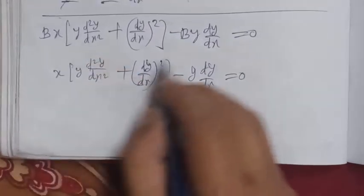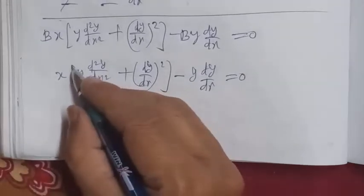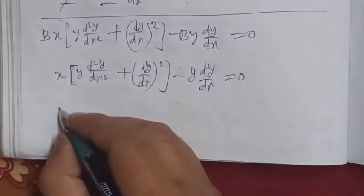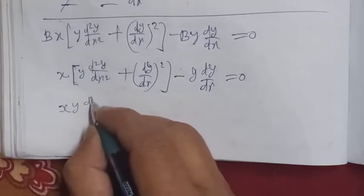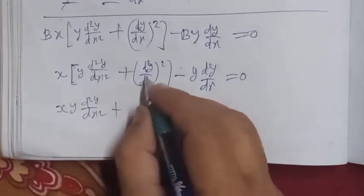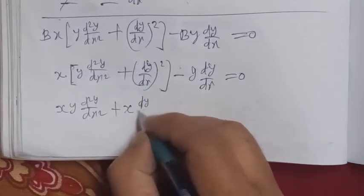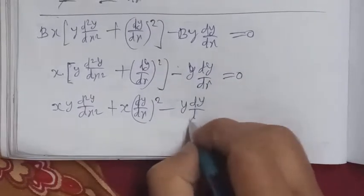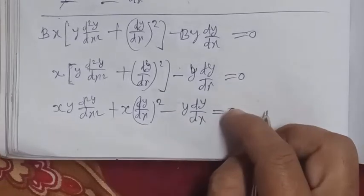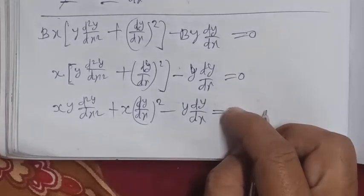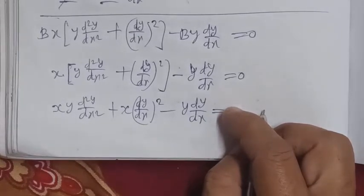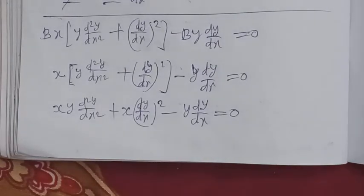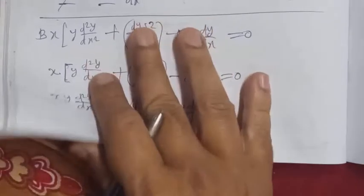Opening the bracket and multiplying x into both terms, we write: xy(d²y/dx²) + x(dy/dx)² - y(dy/dx) = 0. This is the required differential equation of the given solution. We will now also solve this by a second method.